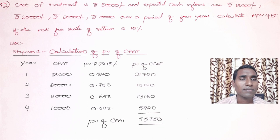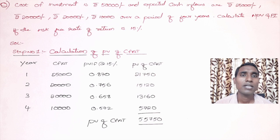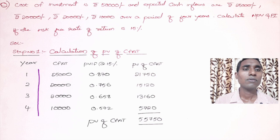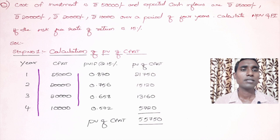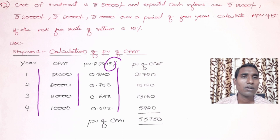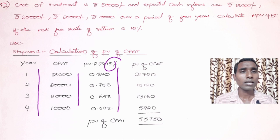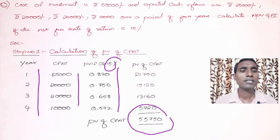The beauty of the question is it is asking both NPV and PI. The computation procedure is the same — only the last step differs. Step one: calculate the present value of CFAT. I took the CFAT for four years and applied the present value interest factor from the A3 table at 15%. Table values are given in the description box — a link is provided. CFAT is column A, PVIF at 15% is column B, and PV of CFAT equals C, which is A multiplied by B.